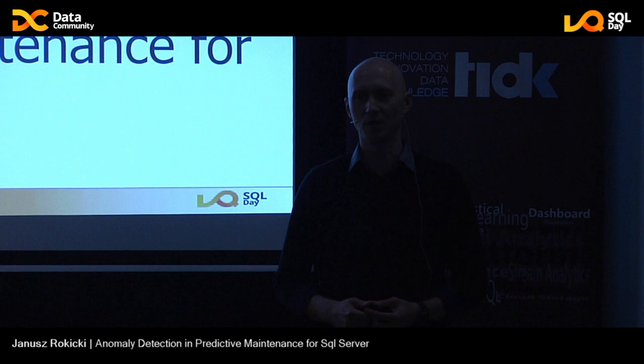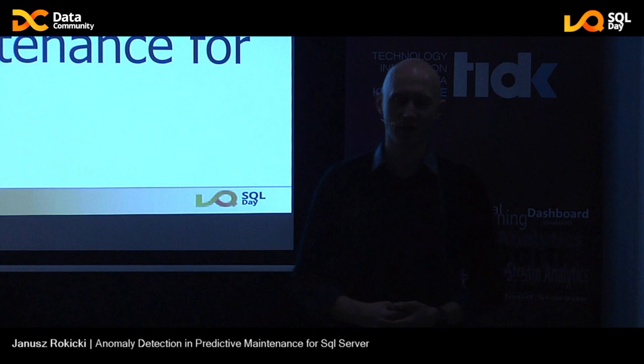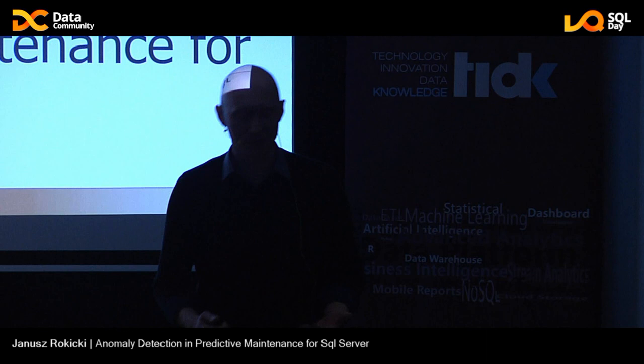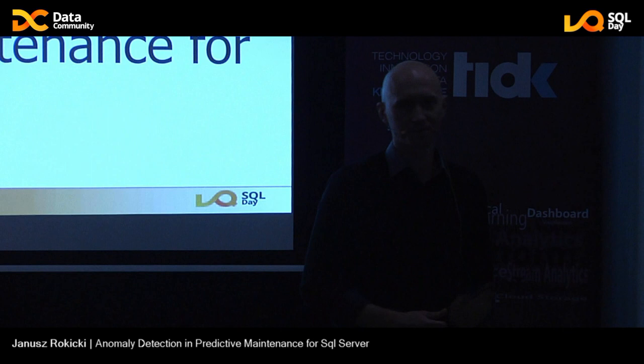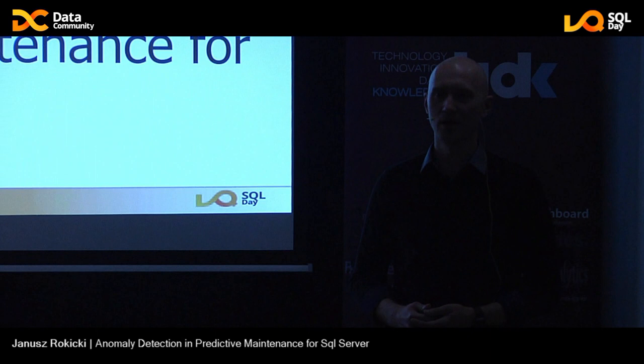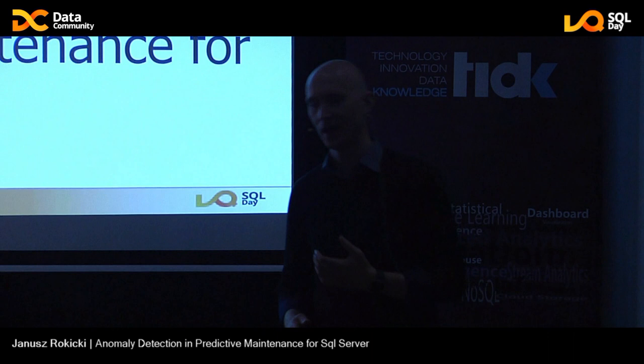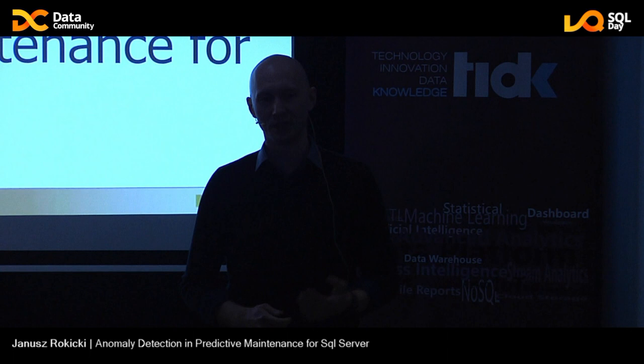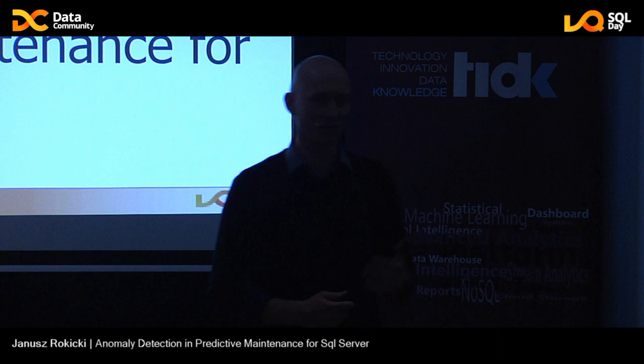Anomaly detection in general data science answers five questions. First: is it A, B, or C? — that's classification. Second: how much or how many? — that's regression. Third: what's the structure? — segmentation and clustering. Fourth: what's next? — control and reinforcement learning. And fifth: is it normal or is it weird? — that's anomaly detection. Today I'm going to show you how to answer that last question.